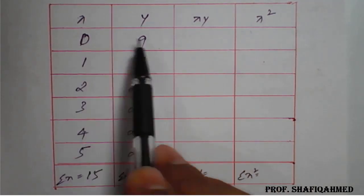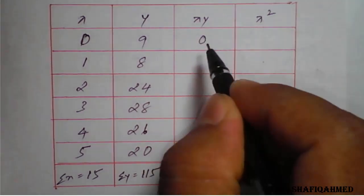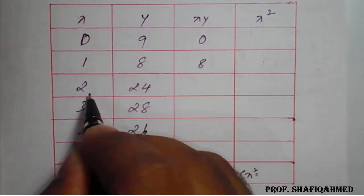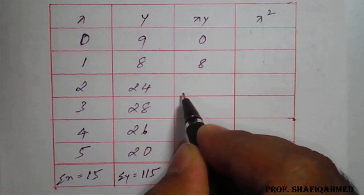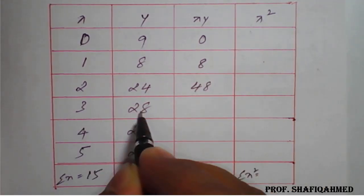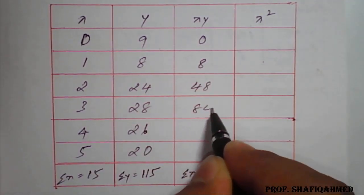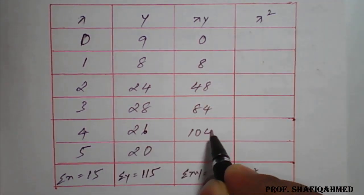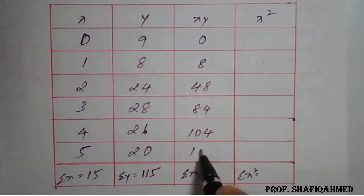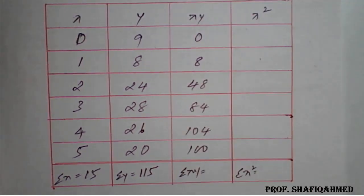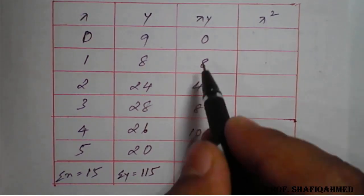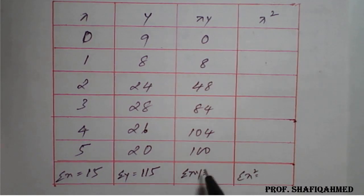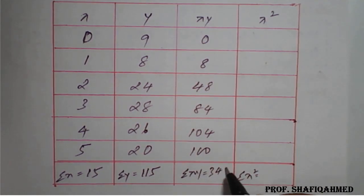Then you multiply: 0 into 9 is 0, 1 into 8 is 8, 2 into 24 is 48, 3 into 28 is 84, 4 into 26 is 104, 5 into 20 is 100. So if you add the summation, summation of xy will be 344 on adding.